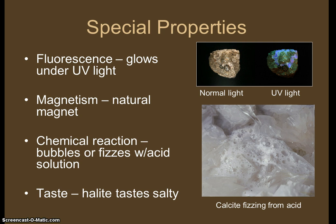Finally, special properties. Fluorescence means that under a UV black light, some minerals will glow — in normal light it looks like a plain rock, but under the black light the mineral glows different colors. Magnetism means the mineral has magnetic qualities; magnetite is an example. Sometimes if you powder the mineral and put acid on it, it'll start to bubble as a chemical reaction — like calcite fizzing, which helps identify it. And halite specifically tastes salty, so taste can sometimes help you identify what it is.